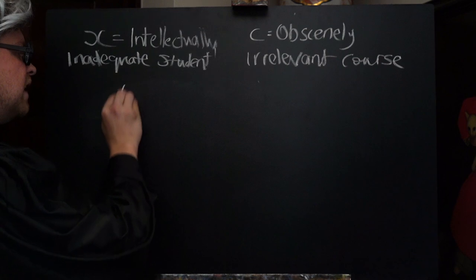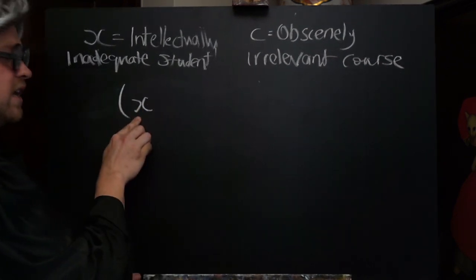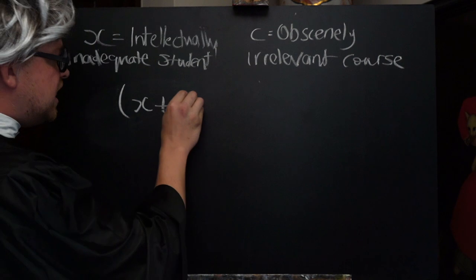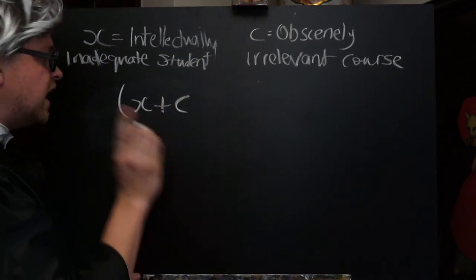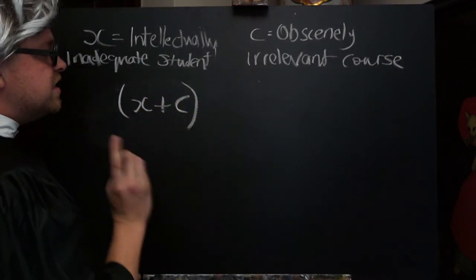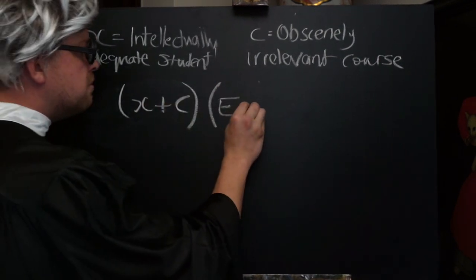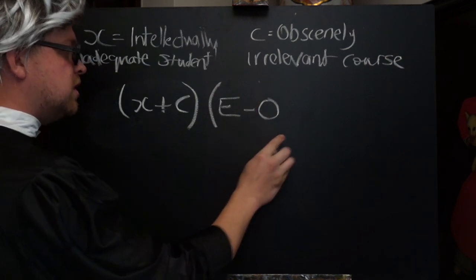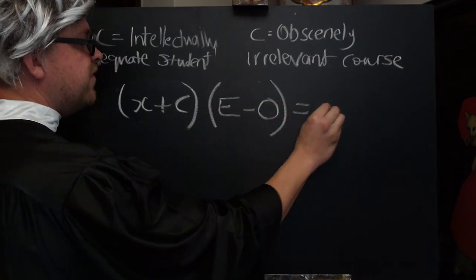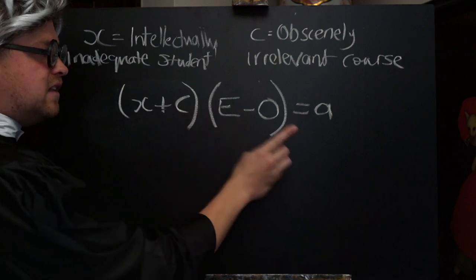If we take the beginning of our formula for Volkism, that is X, Intellectually Inadequate Student, plus C, Obscenely Irrelevant Academic Course, but this time we multiply it by E, Inflated Ego, minus O, Meaningful Job Opportunities. Then we end up with A, Student Activist.